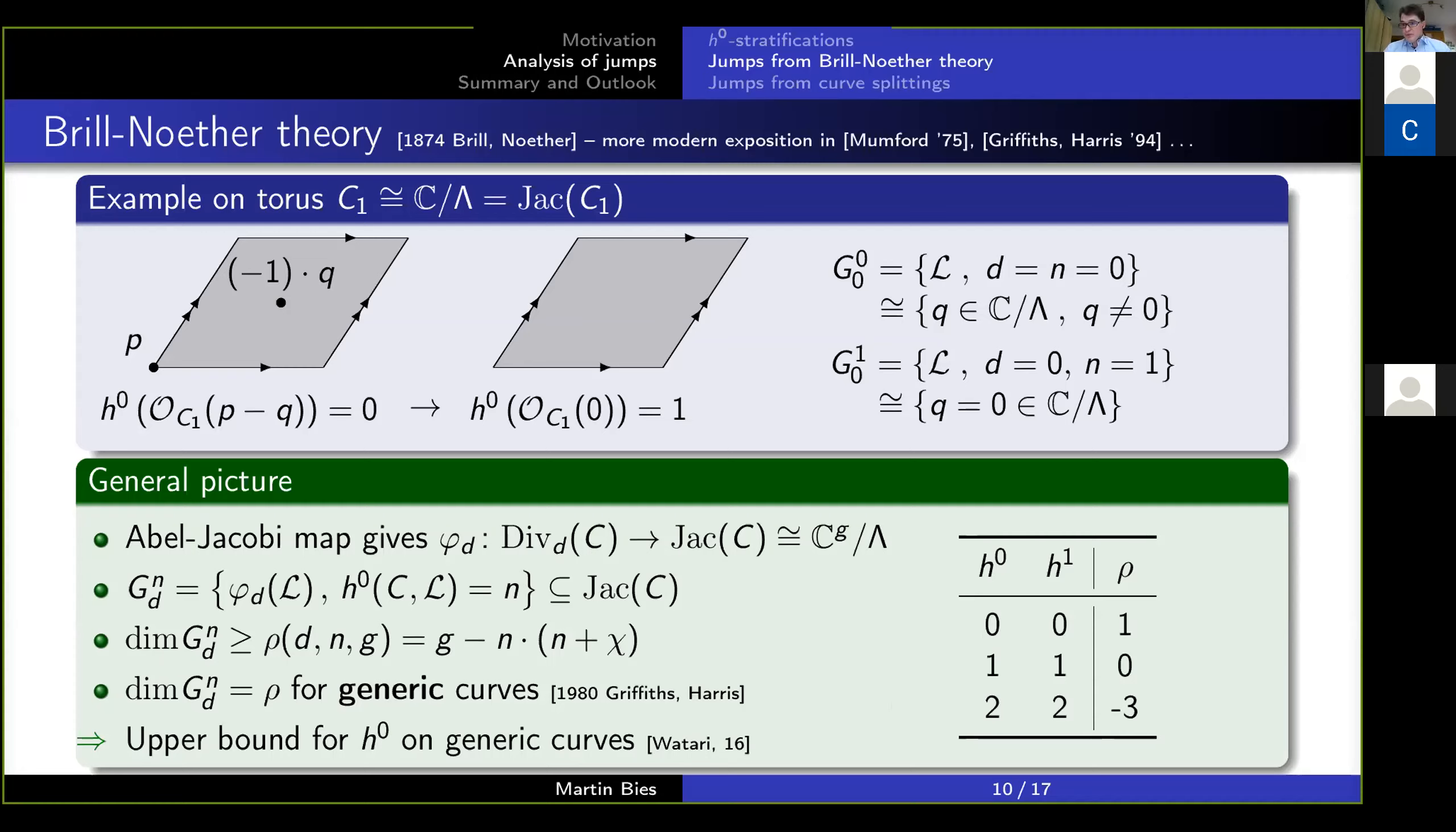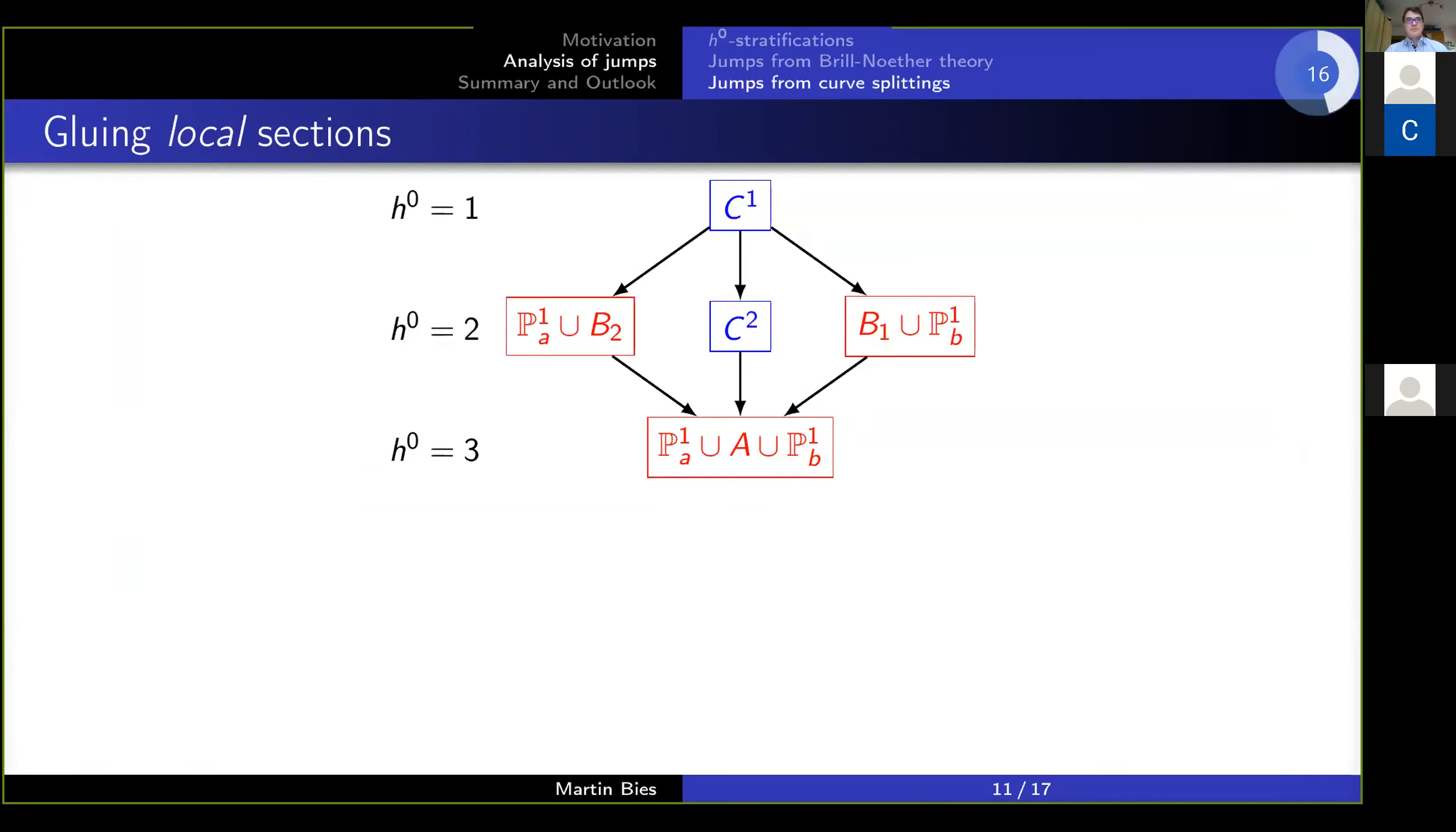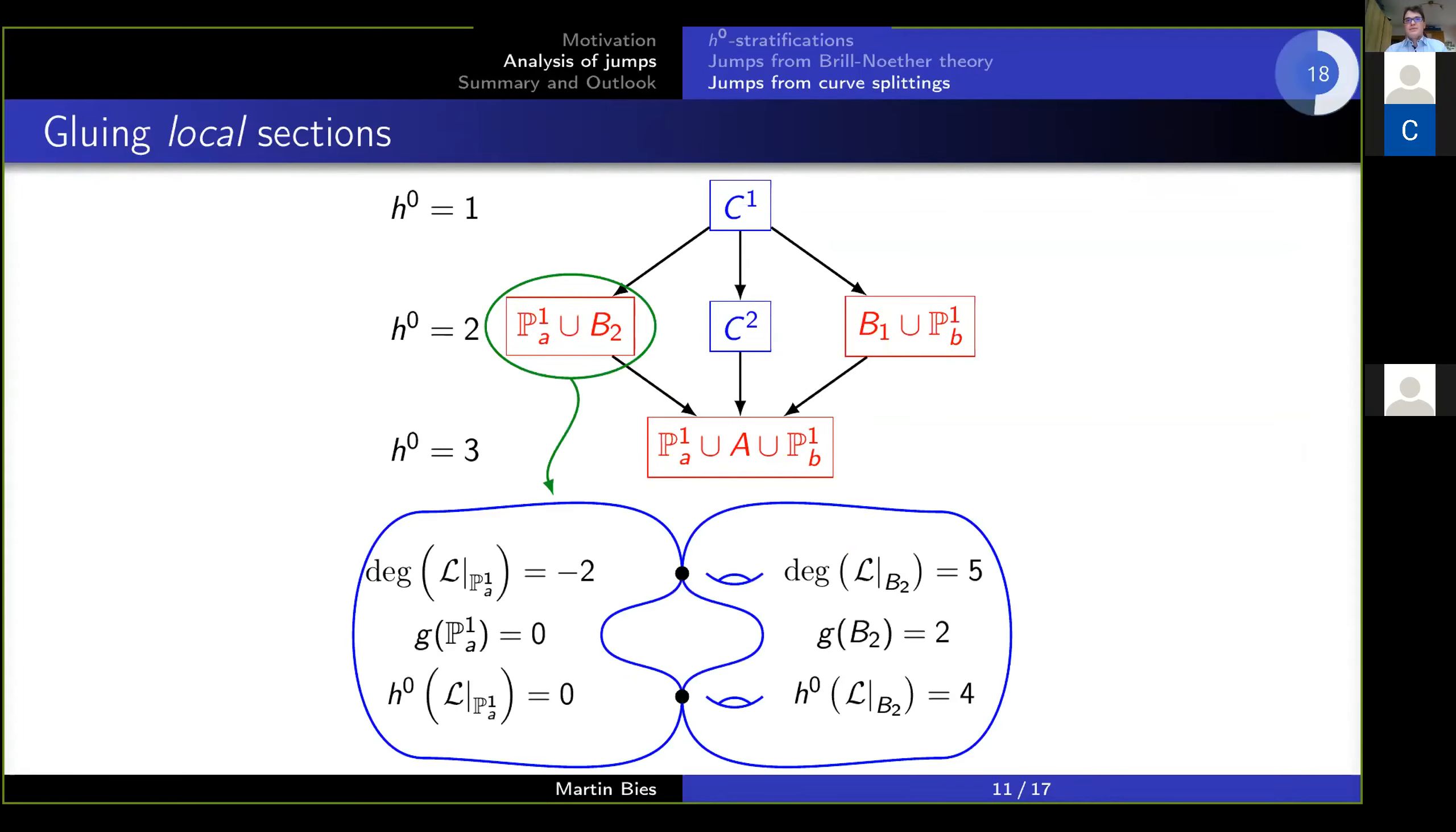So that's it for Brill-Noether theory. Let me now turn to the curve splittings. And for that, let me turn back to the opening example, which has this nice stratification diagram. And let me zoom into the situation on the left, i.e. we factor off one P^1.